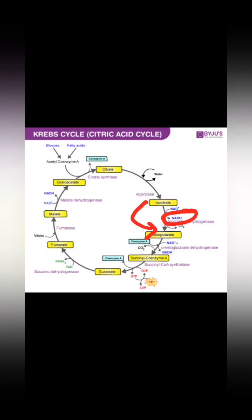As we have seen in glycolysis there was a rate-limiting step, the Krebs cycle similarly has three spots where the cycle is regulated — three rate-limiting enzymes and steps.